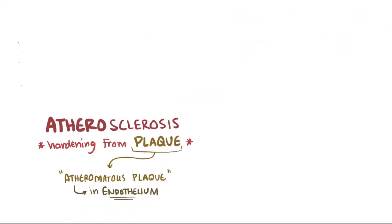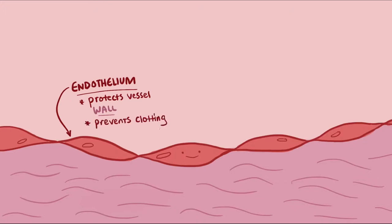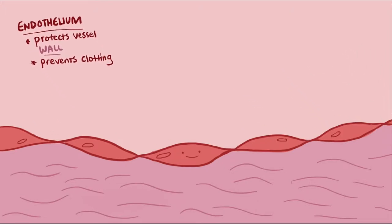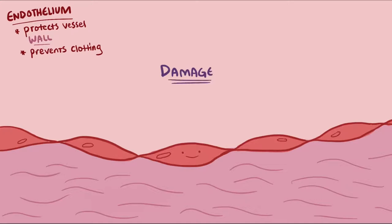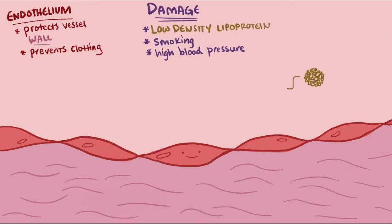The blood vessel endothelium is made up of a single layer of cells and does two jobs. First, it protects the rest of the blood vessel wall from the blood, like a coat of varnish on your wood furniture. Secondly, it secretes proteins on its surface to prevent the blood from clotting. Your endothelium can become damaged — low density lipoproteins, chemicals from smoking, and high blood pressure all wreak havoc on the endothelium, breaking it down.